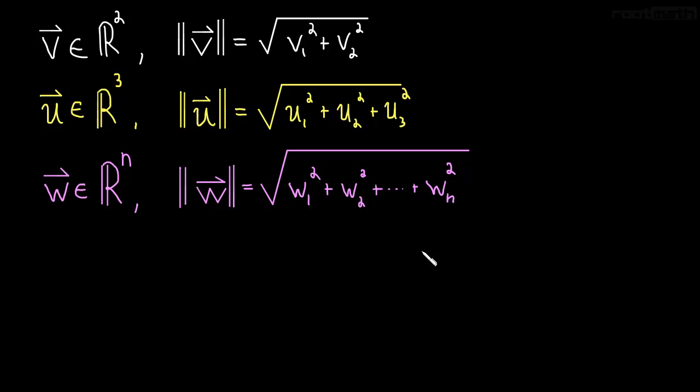So really, you just take each component individually, you square it, you add all those together, and then you take the square root. That's how you find the length of any vector.